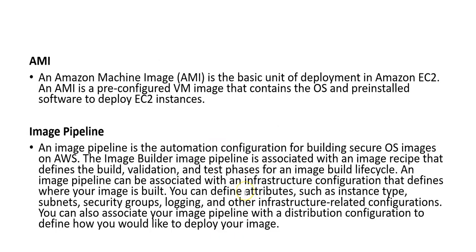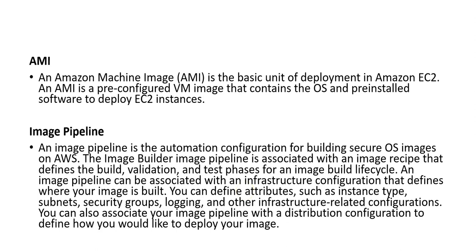We have the concept section. First, AMI — an Amazon Machine Image is the basic unit of deployment in Amazon EC2. An AMI is a pre-configured VM image that contains the OS and pre-installed software. To deploy EC2 instances, you can create the servers out of these inbuilt AMIs given to us by Amazon.